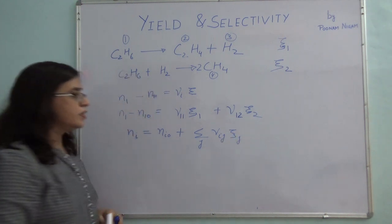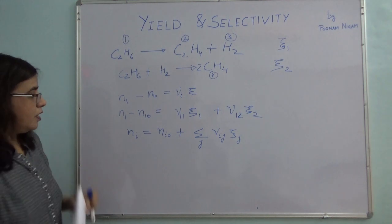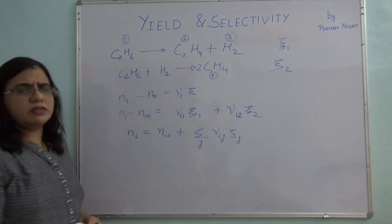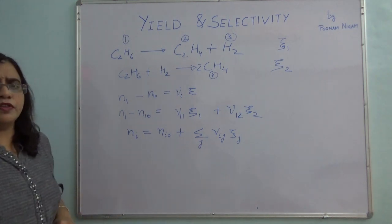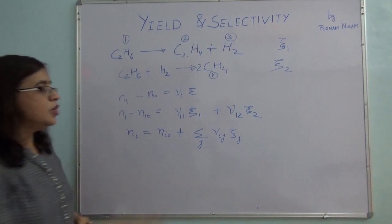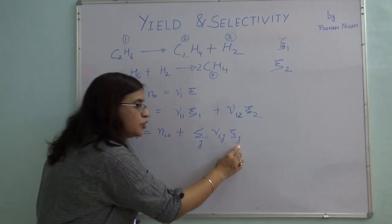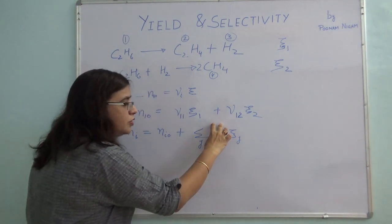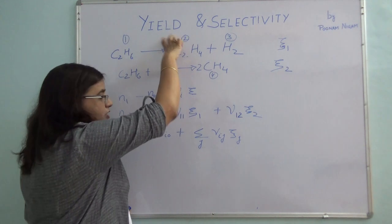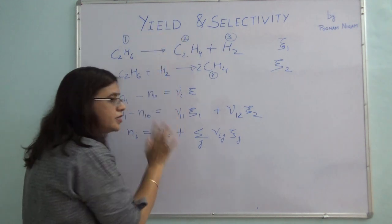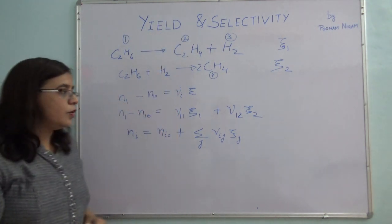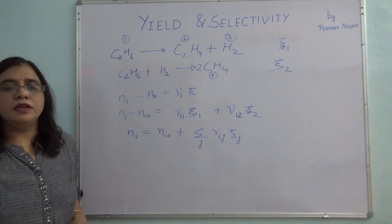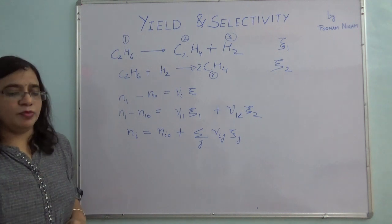So it's very easy. Any number of reactions — 2, 3, or 4 — you now know how to handle it. You have to just know the zeta or extent of reaction, which you know from your reactions, and N_i0 is given. Then you can find out your final number of moles.